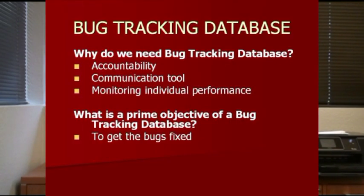Why do we need a bug tracking database? Why don't we just print it out in Word or Excel and keep it in a paper folder? First of all, accountability — if a bug was reported, we have to know the status, whether it is fixed or not fixed. It's about keeping developers accountable, so we know who assigned which bugs, who fixes a lot, and who fixes nothing.